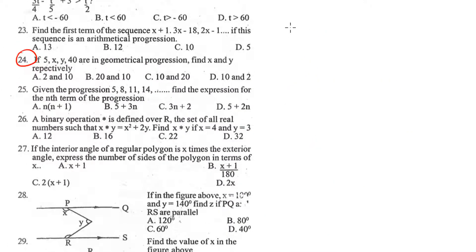We want to look at question number 25. We are given the progression 5, 8, 11, and 14. I want to find the expression for the nth term of the progression. We know the first term a is 5. The common difference will be the difference between each entry. You can say 8 minus 5 or 11 minus 8 is the same. We have 3.